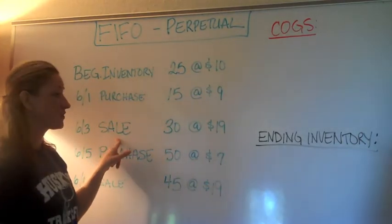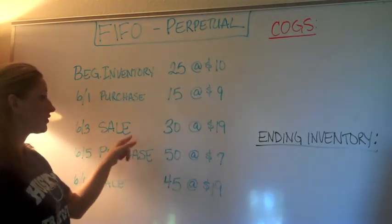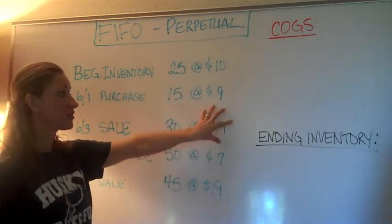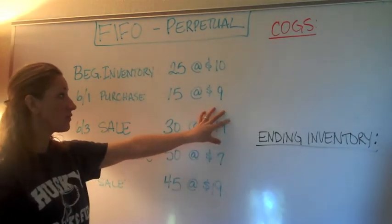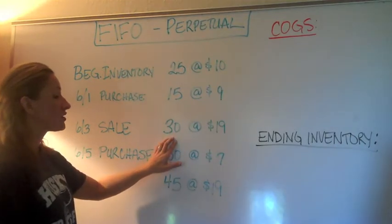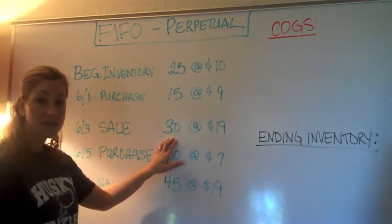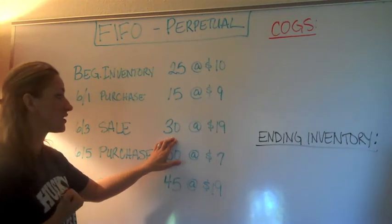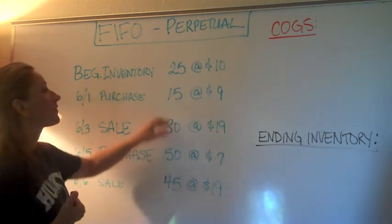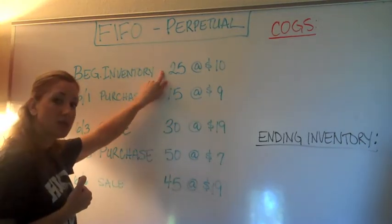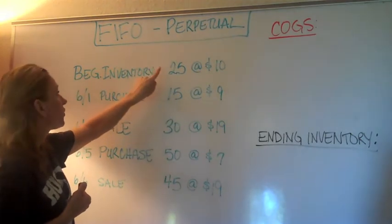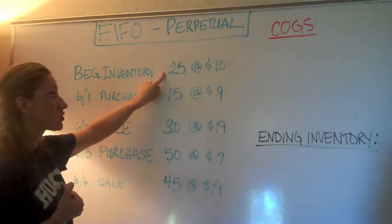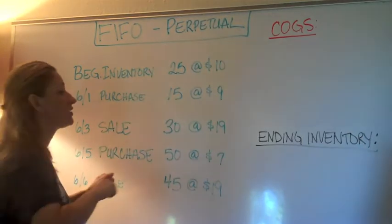We're going to look at our first sale, which was on June 3rd — 30 units at $19. We need to find the cost associated with those 30 units that we sold. So we have to go to the first goods that we purchased, which is our beginning inventory.